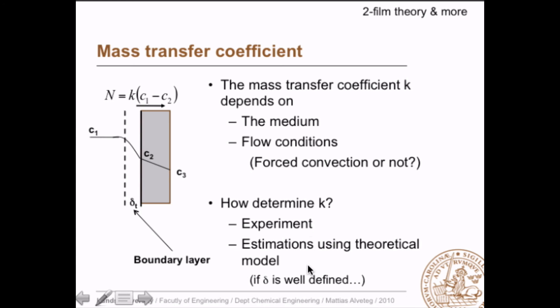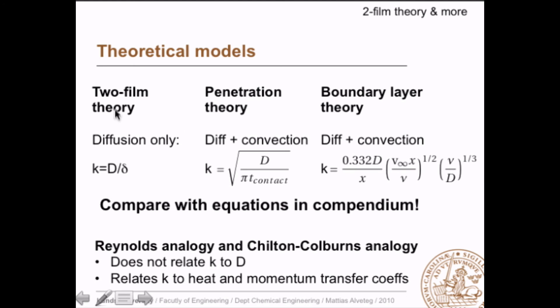You can combine experiment and theory: determine the mass transfer coefficient at a few temperatures experimentally, then use a theoretical model to interpolate. There are several theoretical models: two-film theory states that only diffusion occurs in the film; penetration theory and boundary layer theory both account for diffusion and convection with quite different equations. Later in the course we will also discuss Reynolds analogy and Chilton-Colburn analogy, which relate the mass transfer coefficient to heat transfer and momentum transfer coefficients rather than to diffusivity.